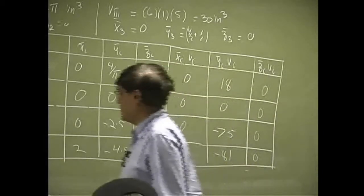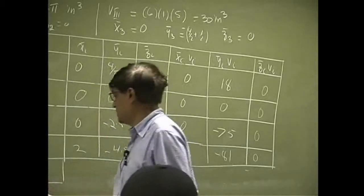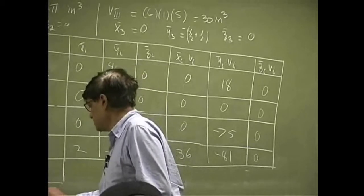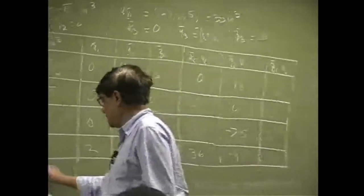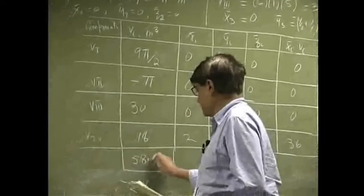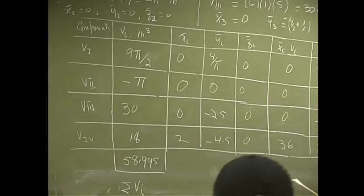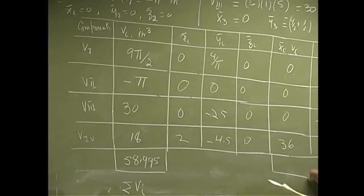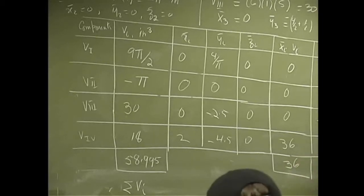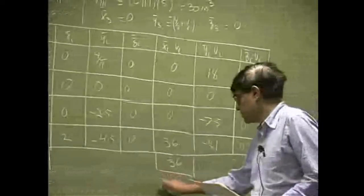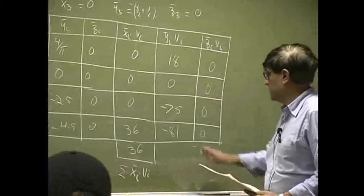So we are going to do the sum. We add everything in this column, that's the summation for the volume. And if you add everything up, it comes out to be 58. 995, you add everything up here, that comes out to be 36. And that's Xi bar times Vi.